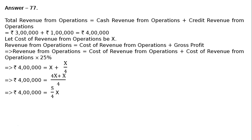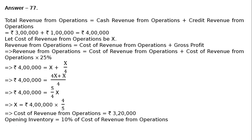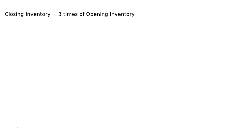Solving: x equals ₹4 lakhs × 4/5, which means cost of revenue from operations equals ₹3,20,000. Opening inventory is 10% of cost of revenue from operations, that is 10% of ₹3,20,000, which equals ₹32,000. Closing inventory is 3 times opening inventory, so ₹32,000 × 3 equals ₹96,000.